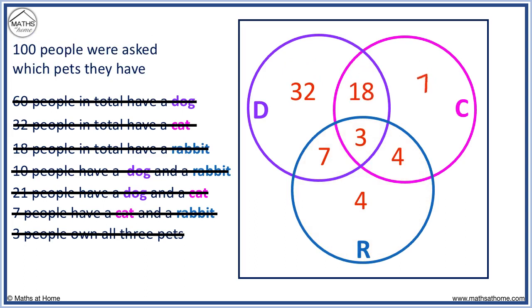32 plus 18 equals 50, plus 7 equals 57, plus 3 equals 60, plus 7 equals 67, plus 4 equals 71, plus 4 equals 75. We have 75 people so far, so we need 25 more to make 100.